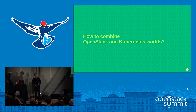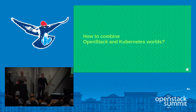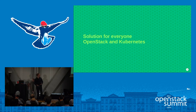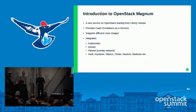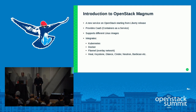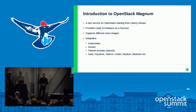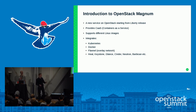We have to combine these two worlds. From one side we have the OpenStack world, which is the perfect infrastructure-as-a-service framework. From the other side we have Kubernetes, which is the tool for scheduling applications. This is a perfect solution for everyone — OpenStack and Kubernetes. This can be brought to users with the new OpenStack service called Magnum, introduced with the Liberty release. It is containers-as-a-service. It supports different Linux images and integrates different components like Kubernetes, Docker, Flannel, and OpenStack services like Keystone, Glance, Cinder, and so on.